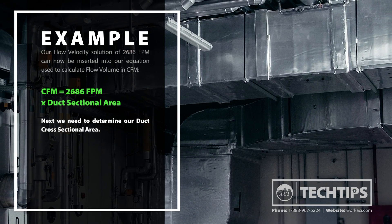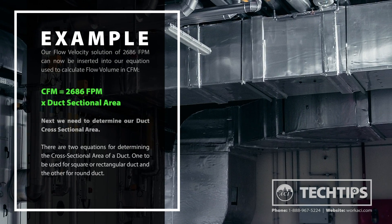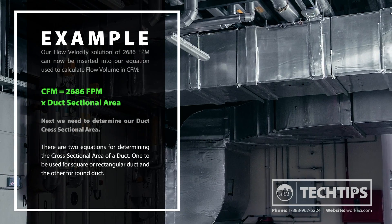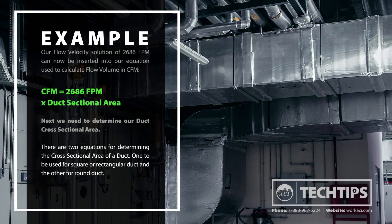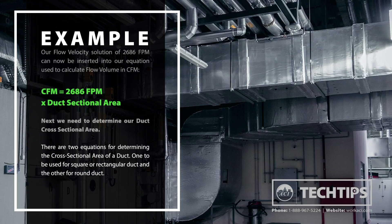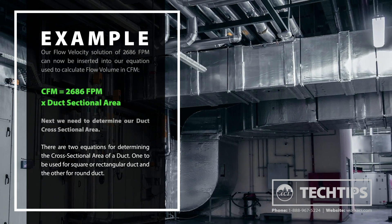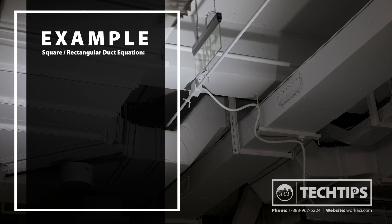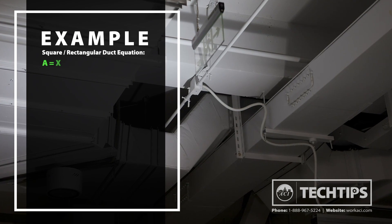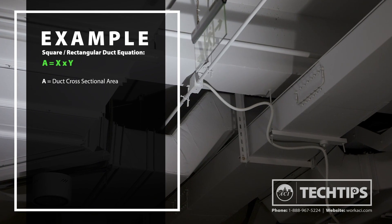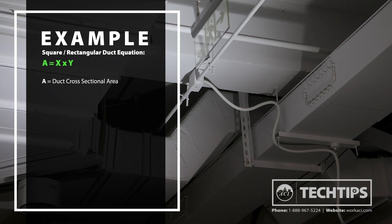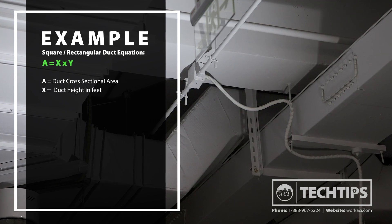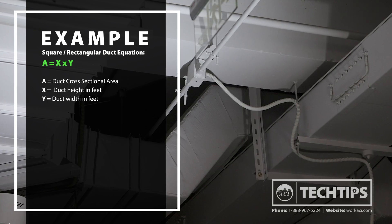Next, we need to determine our duct cross-sectional area. There are two equations for determining the cross-sectional area of a duct: one for square or rectangular duct and the other for round duct. The equation for square or rectangular duct is A equals X times Y — A being the duct cross-sectional area, X the duct height in feet, and Y the duct width in feet.